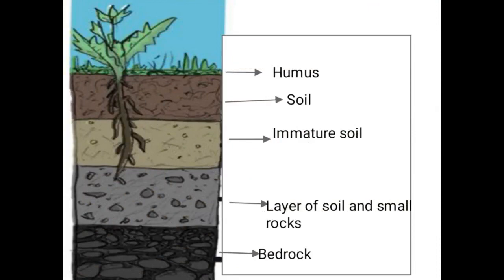If the land has mature soil, the topmost layer is formed by the decomposition of the remains of plants and animals. Plants or animals ka jo decay part rehta hai, woh soil mein mix ho jata hai, decompose ho jata hai, isliye topmost layer form hoti hai. This layer is called humus.